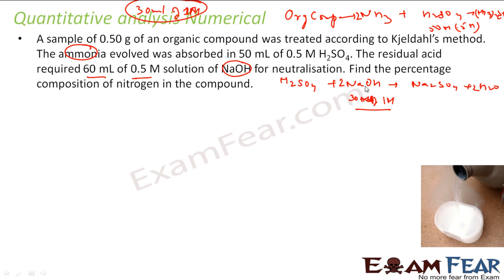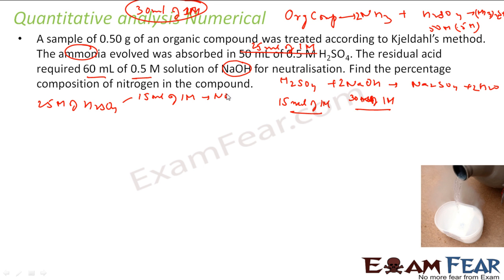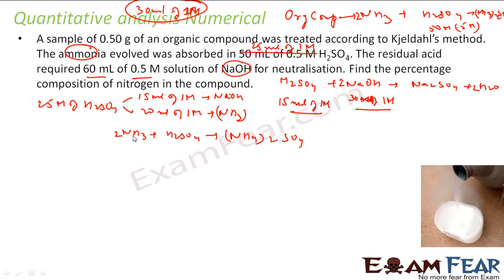I had 50 mL of 0.5M H₂SO₄, which is equivalent to 25 mL of 1M H₂SO₄. Of this, 15 mL of 1M reacted with NaOH. So the balance is 25 − 15 = 10 mL of 1M H₂SO₄ that reacted with the ammonia.